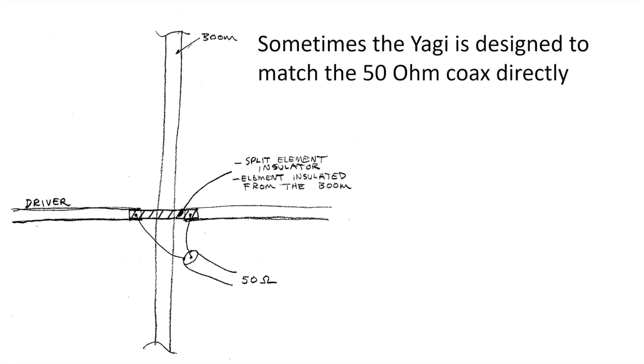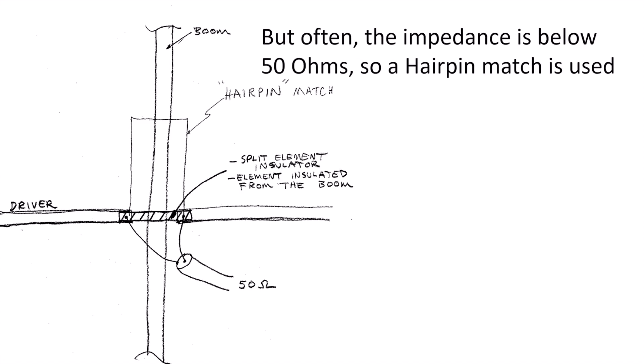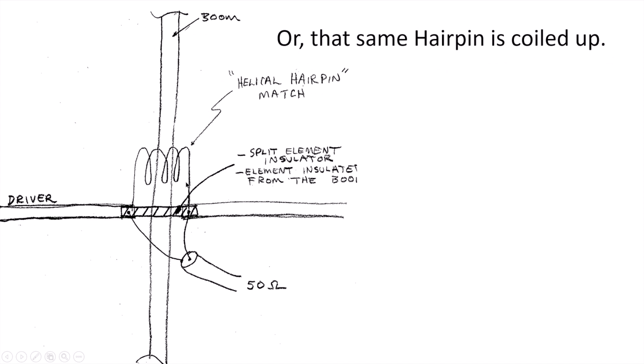Sometimes a Yagi can be designed to match 50 ohm coax directly. But more often than not, the impedance is below 50 ohms. So we'll use something called a hairpin match or a coil up the hairpin to transform that lower impedance to match the 50 ohms.